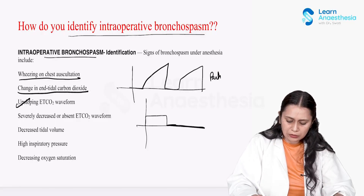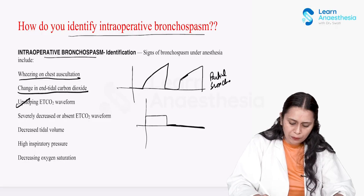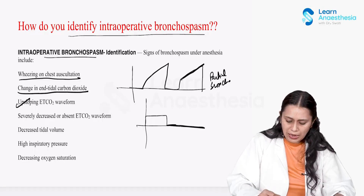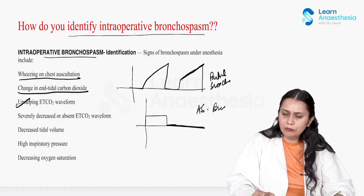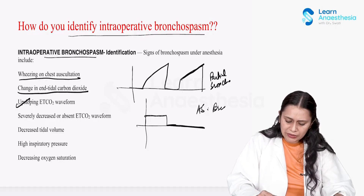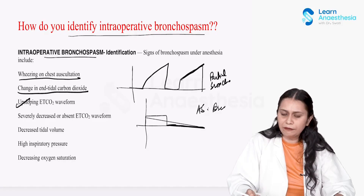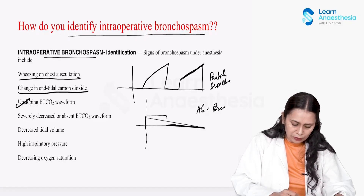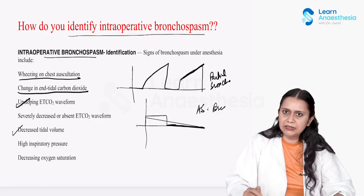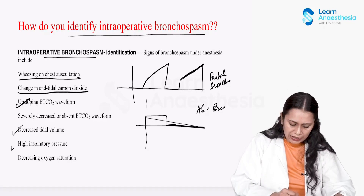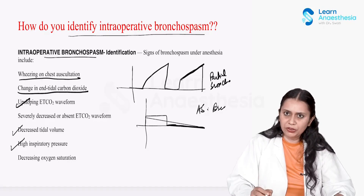In partial bronchospasm there would be upsloping of the plateau. In absolute bronchospasm, due to air trapping, the EtCO2 will decrease and may become completely flat. There would also be decreased tidal volume, high inspiratory pressure, and decreased oxygen saturation.